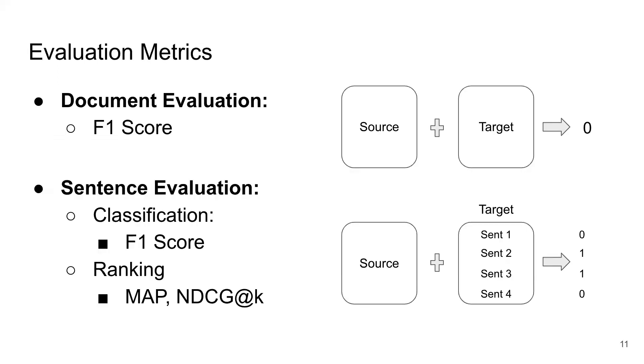We evaluate models in two different settings, the document level and the sentence level. For the document level tasks we're evaluating as document pair classification using F1 score. A positive document level label for a source target pair indicates that the target document reuses some sort of content from the source. A negative label indicates no reuse.